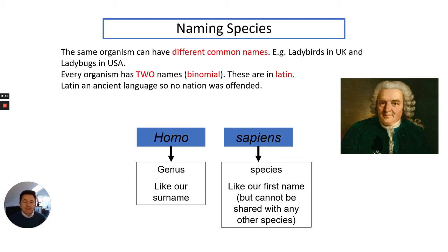The reason they use Latin is that it's an ancient language and also the fact that no nation would be offended by giving them these names because Latin is not a specific language used by one country. Here is an example for humans. Humans under the genus is Homo, and our species is sapiens, so Homo sapiens. Genus is like our surname and the species name is like our first name, but it cannot be shared with any other species.